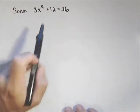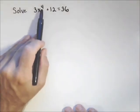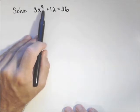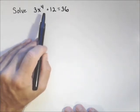So our goal is to solve the following equation for x. Since we have a fourth degree polynomial, there's a good chance we could have as many as four answers. So let's see what's gonna happen.